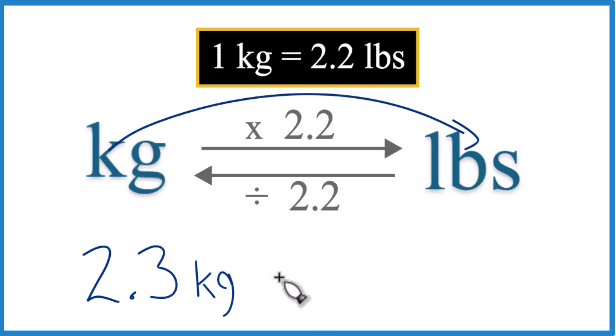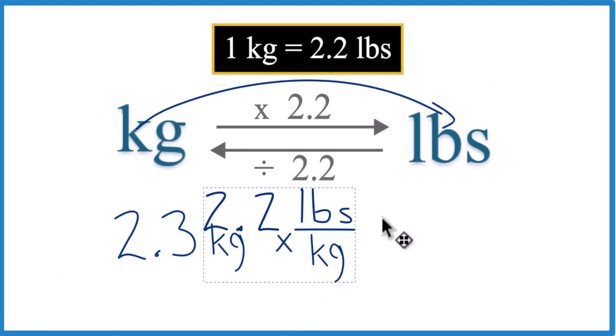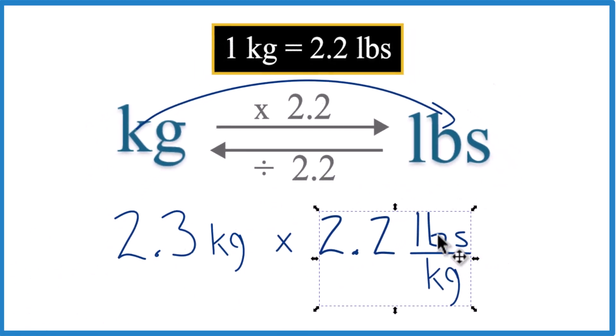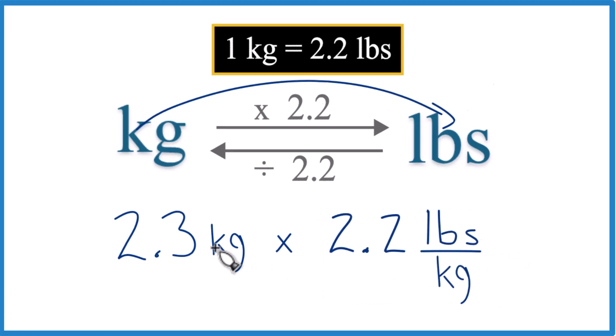So kilograms to pounds, we multiply by 2.2. And it's helpful to remember that's 2.2 pounds per kilogram. We call that a conversion factor. We multiply.